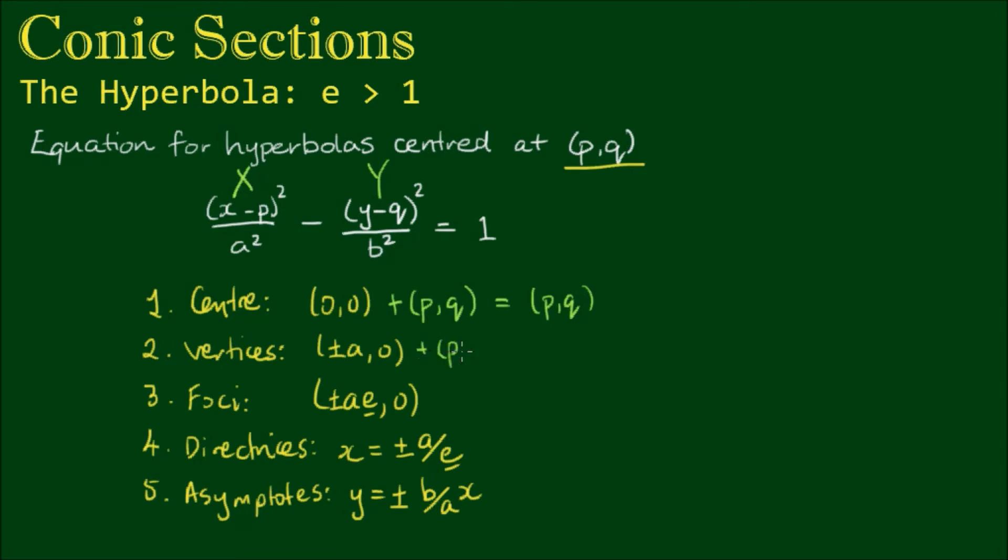The vertices are located at (±a + p, q). So the vertices are still at a distance of a either to the left or the right of the center point.